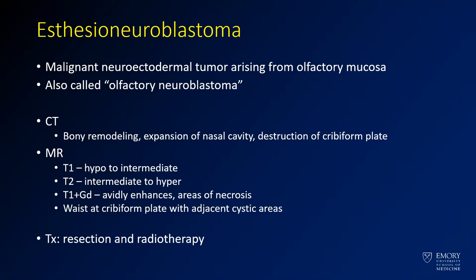In these patients, you can get bony remodeling and expansion of the nasal cavity. You'll often have destruction of the cribriform plates or dehiscence of the roof of the ethmoids. On MR, you tend to have hypointense to intermediate signal on pre-contrast, intermediate T2, and the area should avidly enhance on post-contrast imaging. You'll often see a waist or narrowing at the cribriform plate with cystic areas, and the classic description is cystic areas extending into the anterior cranial fossa.